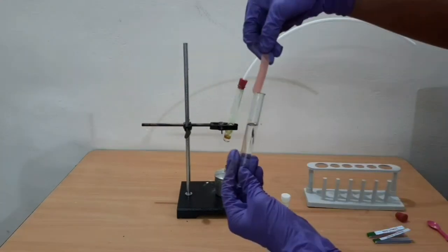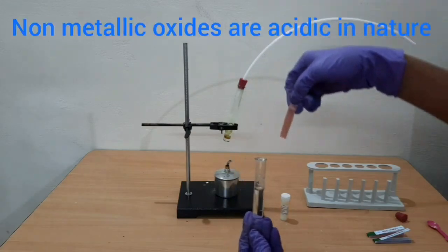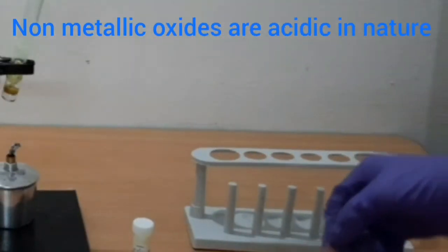There's no change in color with red litmus paper. So we see that the non-metallic oxides are acidic in nature.